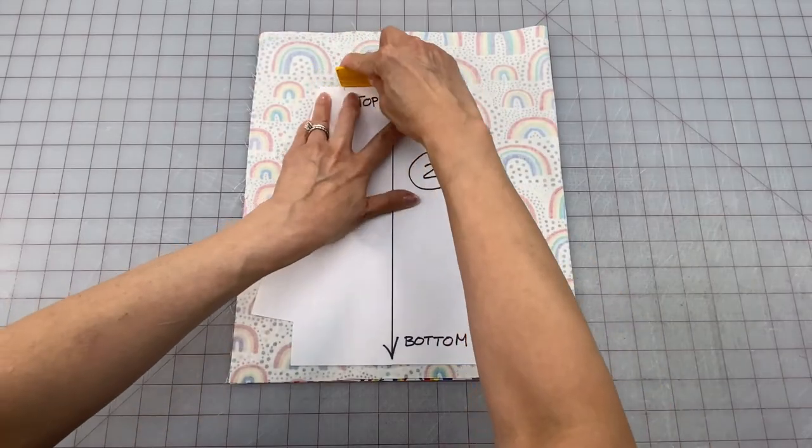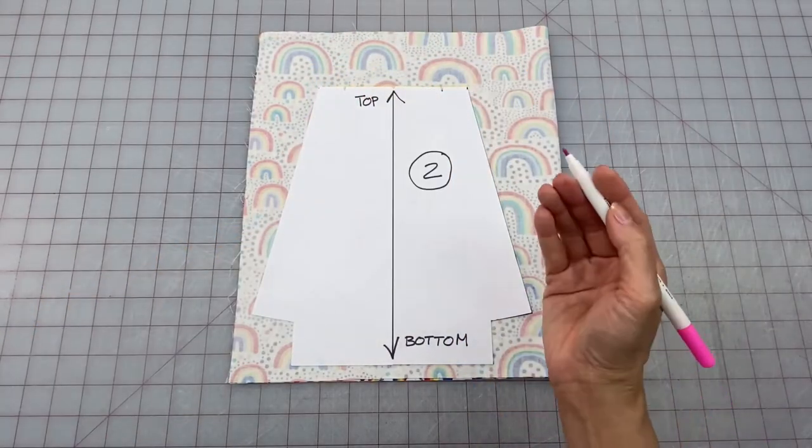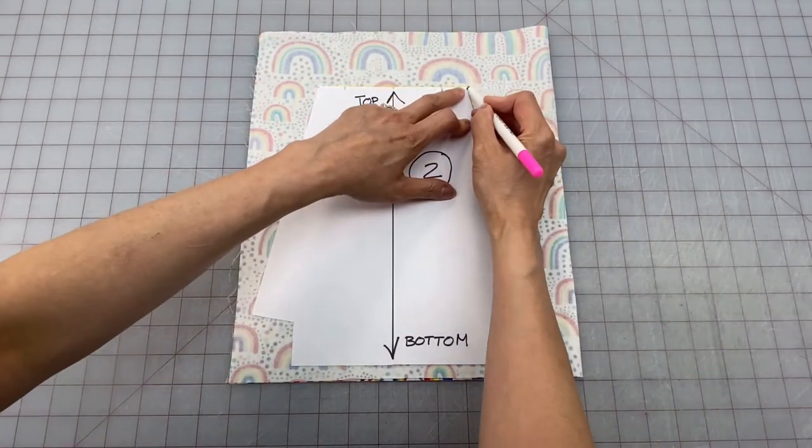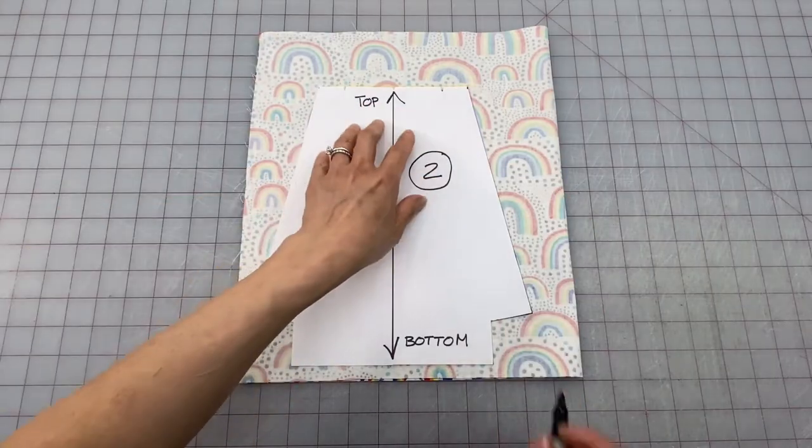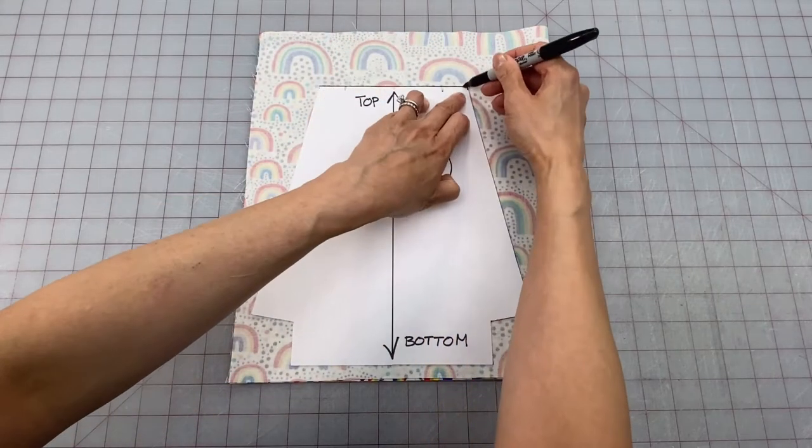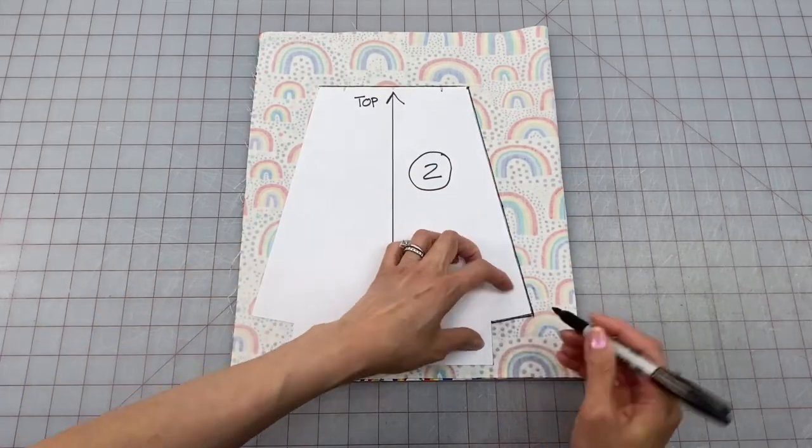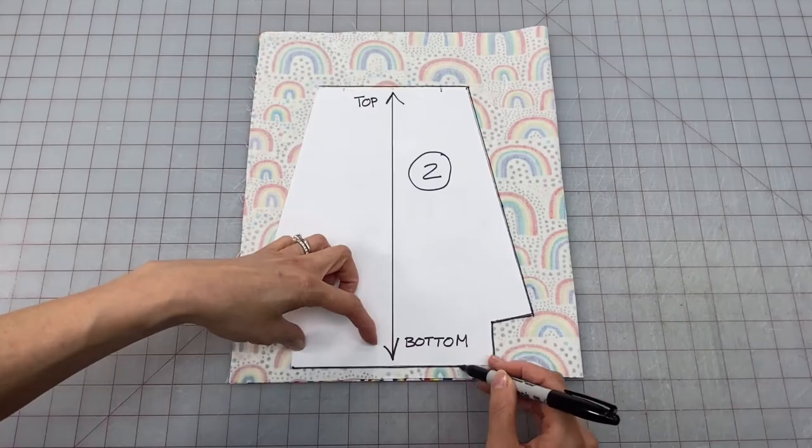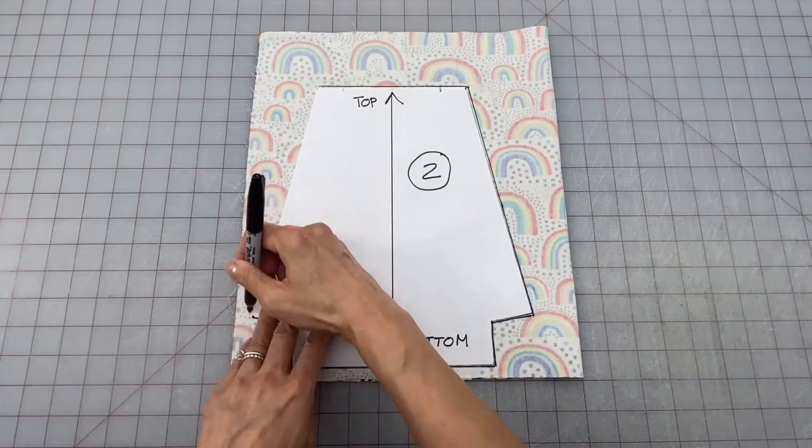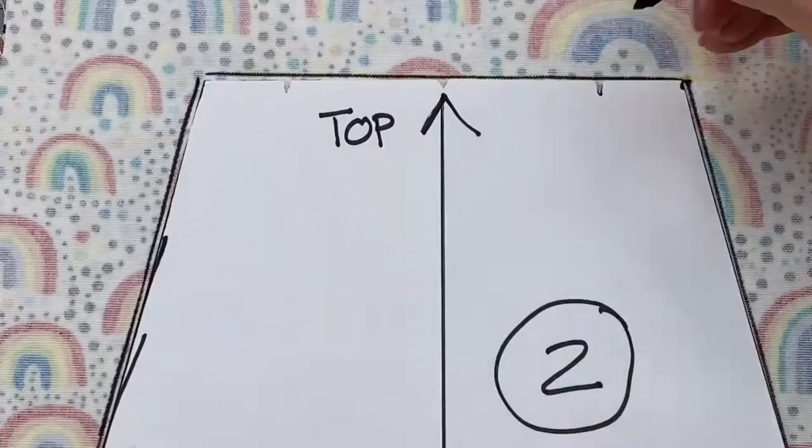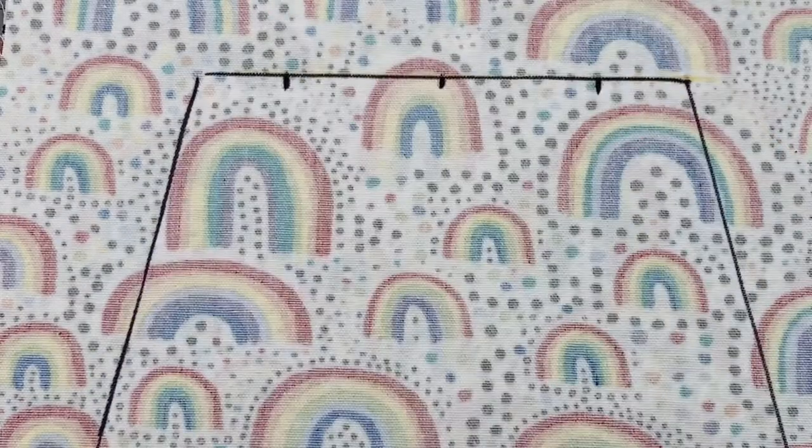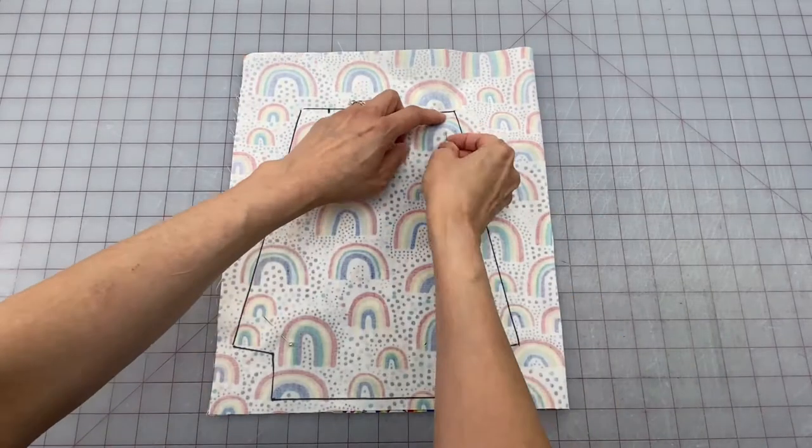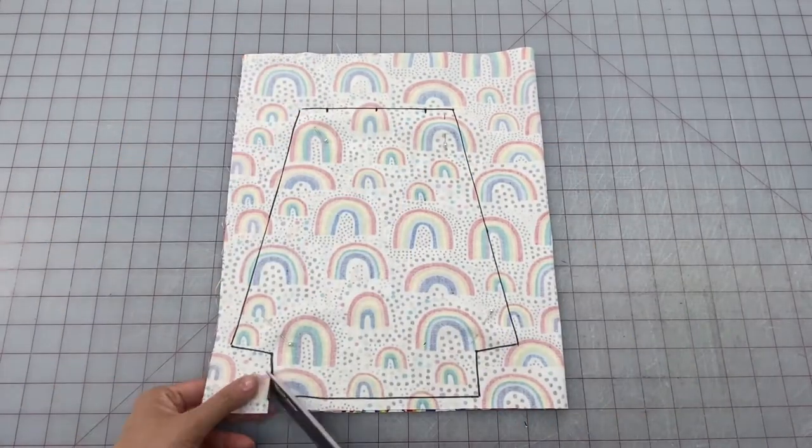Now chalk around your pattern or you can use a marking pen, but because it doesn't show up very well on the fabric on camera I'm just going to use my black sharpie. Now you can completely skip this step if you want to just use a rotary blade or pin your pattern to the fabric and cut out that way. Next mark your three notches at the top, pin your fabric together at the corners and then cut out your two fabric pieces.